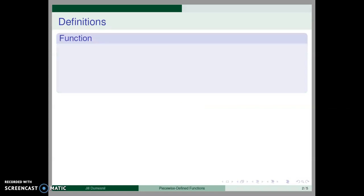Let's quickly review some definitions needed in a discussion of functions. A function is a set of ordered pairs in which no first coordinate is repeated.